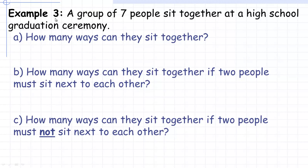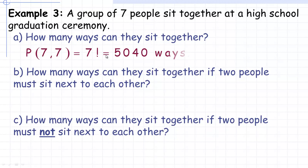In example three, a group of seven people are sitting together at a high school graduation ceremony. The first question is how many ways can they sit together. It's an arrangement of seven people taking seven at a time, so it's seven permute seven, which equals seven factorial — giving 5,040 ways they can be arranged.